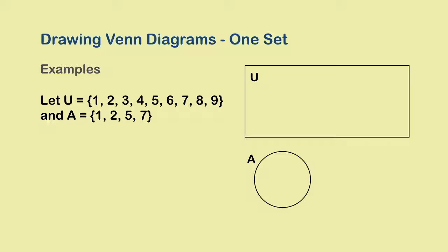How do we do that? Well, when we say A is a subset of U, we essentially mean that everything that is contained in A is also contained in U. In other words, whatever is inside the circle is also present inside the rectangle. So in order to express this fact, we put the circle inside the rectangle.